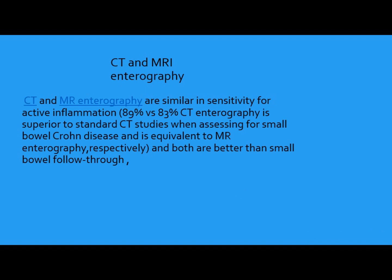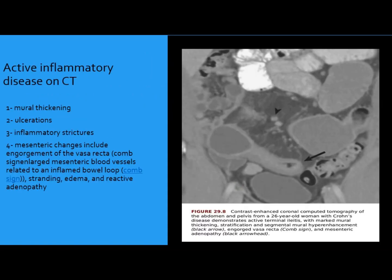After fluoroscopy, we can use CT and MRI. Both are very good, but contrast CT is better than conventional CT, and MRI can also be used — both are better than barium follow-through. On CT in the acute phase, we have bowel wall thickening, ulceration, stricture, and mesenteric changes where we can find lymph nodes and engorgement of blood vessels. This is a double-contrast CT of the abdomen and pelvis in chronic disease showing bowel wall thickening and lymph node enlargement.